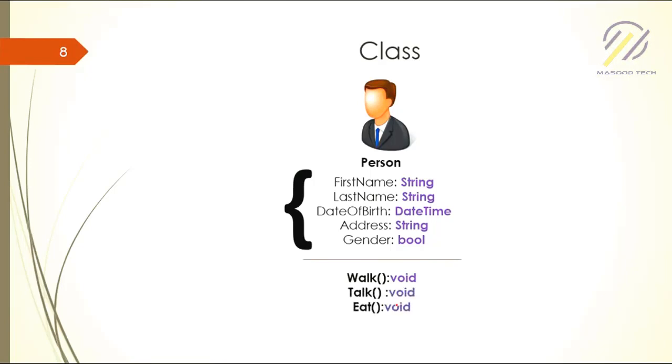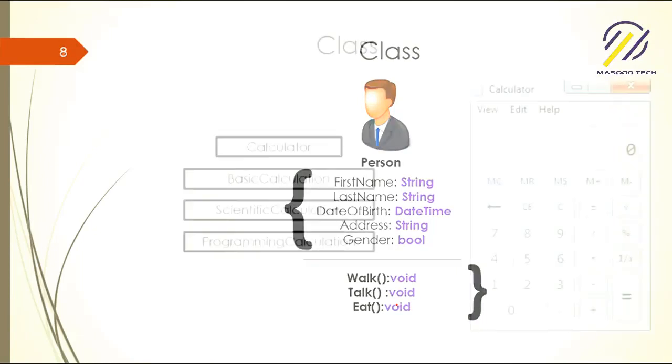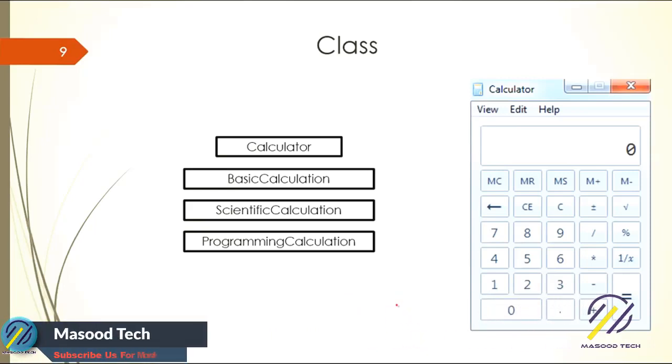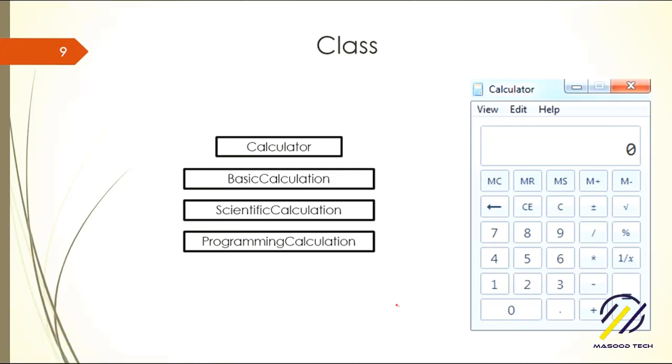So let's say you have a calculator application and you really want to use the classes. What you can do is make separation of your logics into separate classes. Let's say you have basic functionality of the class, so you put those basic functionalities in the basic calculation class. And you have scientific calculation part, you put those into scientific calculation class. And this way you can organize your code. This is the purpose of the class.